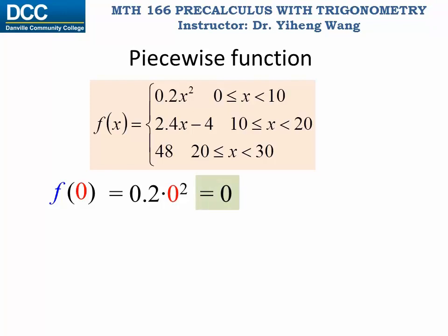Or if we want to evaluate f(12), since 12 is more than 10 but smaller than 20, it falls in the second interval, therefore we use the second equation to evaluate it. 2.4 times 12 minus 4, that equals 24.8.